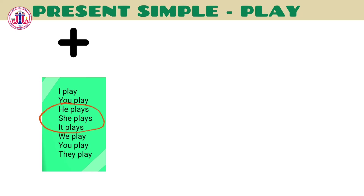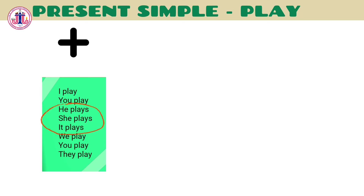As you can see, in the third person — he, she, and it — we add an 's' at the end of the verb: he plays, she plays, it plays.